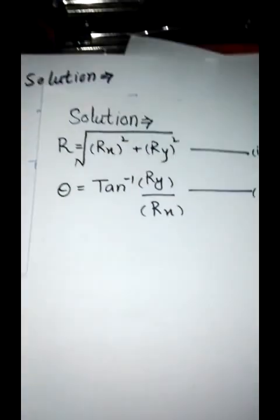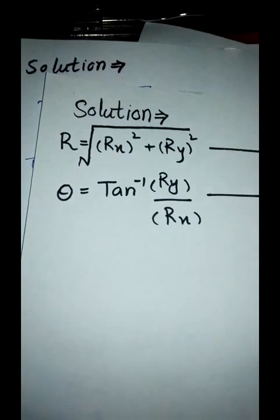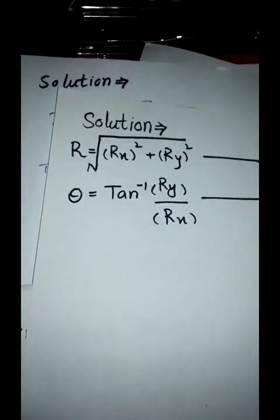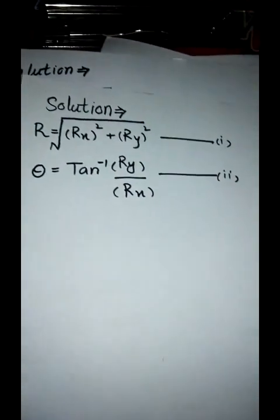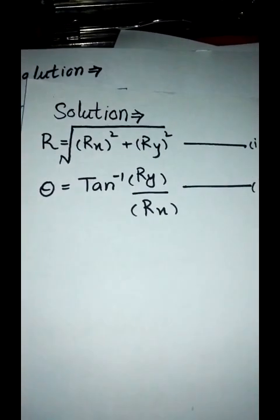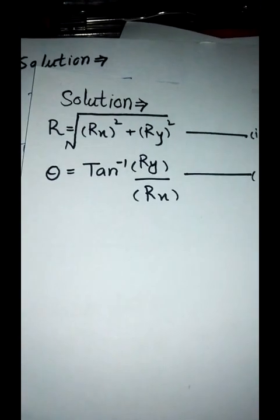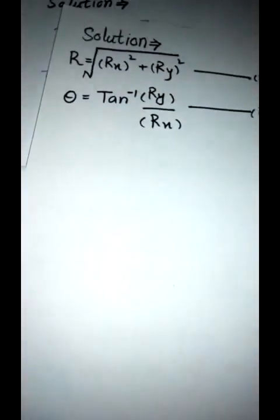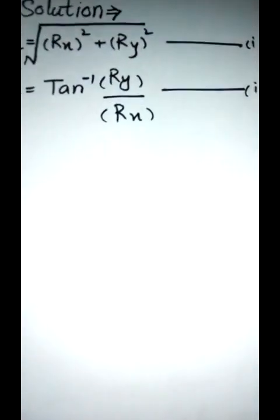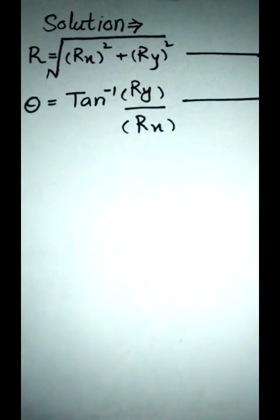We know that from rectangular components addition, the resultant R equals the square root of the sum of all the vectors in the x direction squared plus all the vectors in the y direction squared.